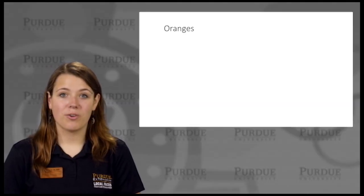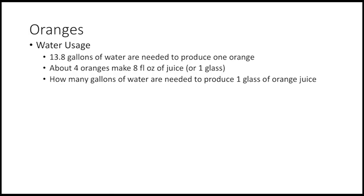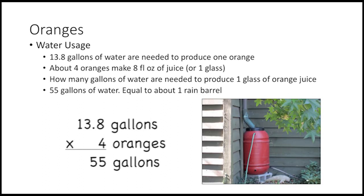Now let's talk about your orange juice. 13.8 gallons of water are needed to produce one orange. About four oranges makes eight fluid ounces of juice, or one glass. How many gallons of water are needed to produce one glass of orange juice? 55 gallons of water — that's equal to about one rain barrel.